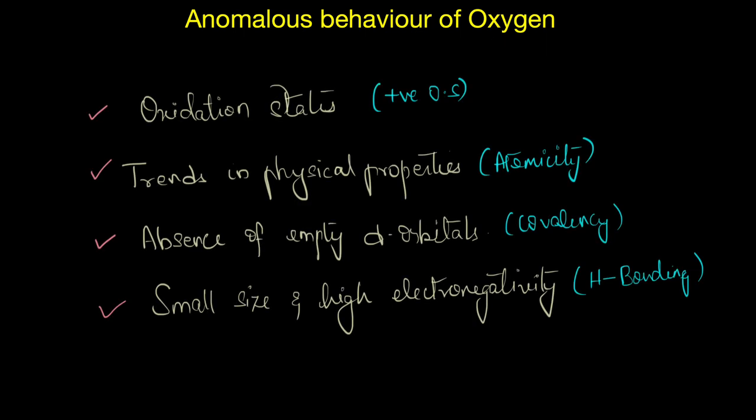So to conclude, what all did we learn in this video? We talked about the oxidation state of oxygen and the cases in which the electronegative oxygen can show positive oxidation states. We also talked about atomicity of oxygen and how it affects the physical properties like melting point and boiling point. We also saw how the absence of d orbitals restricts the covalency of oxygen to 4. And more importantly, we discussed how oxygen has the ability to form strong hydrogen bonds, something that is although not very unique to oxygen but is definitely of great importance.